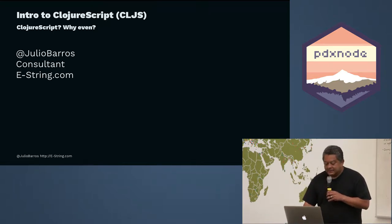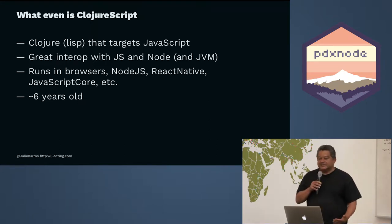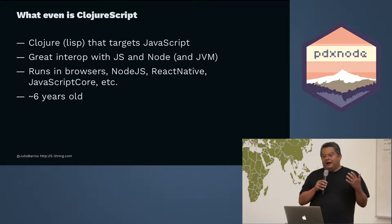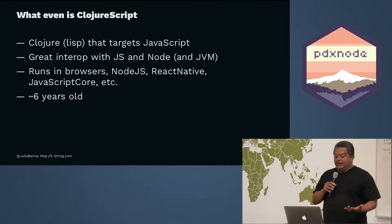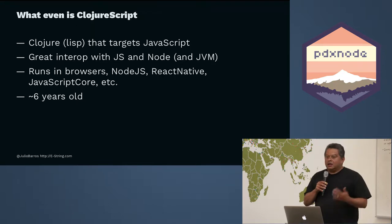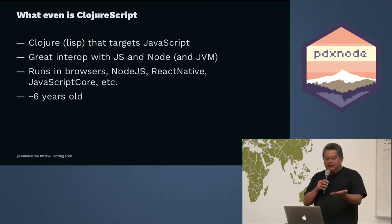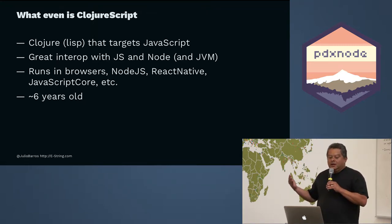So the talk tonight is about why I do that and what I find valuable in it. First of all, what even is ClojureScript? ClojureScript is a Lisp. It's related to Clojure, which is another Lisp, and ClojureScript targets JavaScript — it compiles into JavaScript and runs on JavaScript environments. Clojure targets the JVM, so wherever you would run Java, you could run Clojure, and wherever you run JavaScript, you could run ClojureScript.